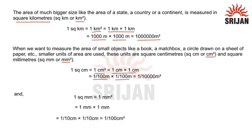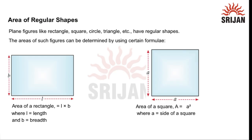One millimeter square equals 1 millimeter multiplied by 1 millimeter, that is 1 upon 10 centimeters multiplied by 1 upon 10 centimeters, which equals 1 upon 100 centimeter square. For regular shapes like rectangles, squares, circles, or triangles, the area can be calculated using specific formulas based on their dimensions.